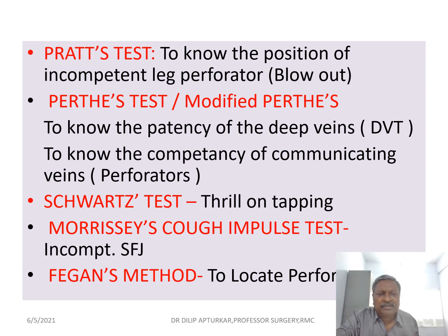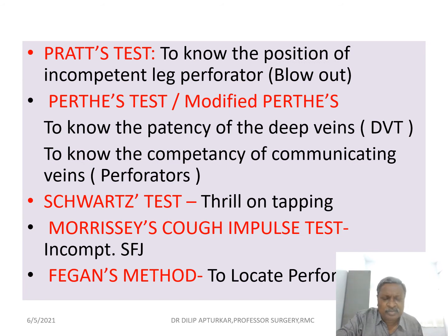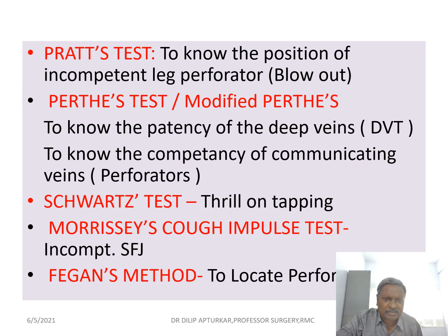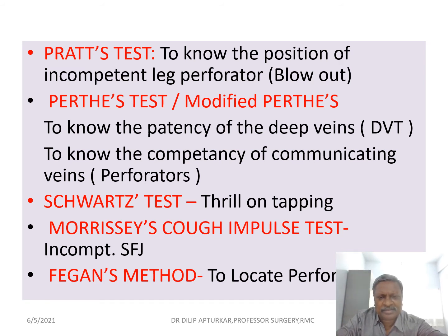In the Schwartz test, we tap the varicosity in the lower part of the leg and feel a thrill near the saphenofemoral junction, due to the dilated column of blood in the dilated vein. Morrissey's Cough Impulse test determines incompetence of the saphenofemoral junction — you feel the cough impulse at the junction in case of a saphena varix. Fegan's method is used to locate the perforators: with the patient standing, blowouts are seen at the site of incompetent perforators; when the patient lies down and the leg is raised, fascial defects are felt at the site of the perforator, allowing us to mark the perforators.